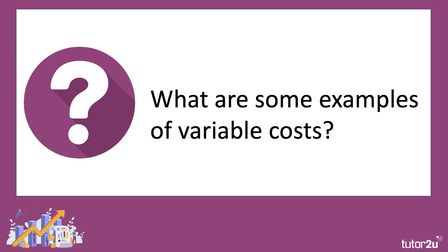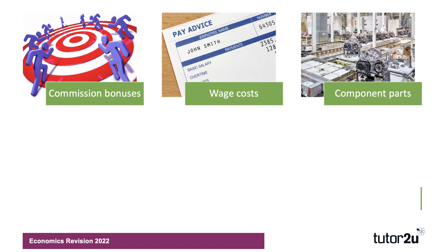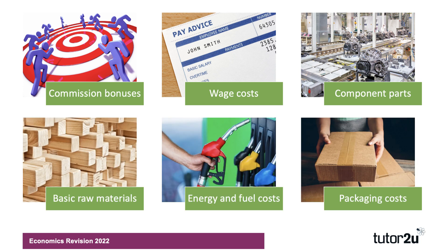So what are some good examples of variable cost? Things like commission bonuses — you pay people more when output rises, often used in advertising and sales. Some wage costs are variable costs; for example, the cost of employing part-time temporary staff is counted as a variable cost. Often those costs are seasonal — the retail sector might employ more people at Christmas or Easter, and tourism and leisure businesses might employ more people in the summer. Component parts are clearly a variable cost, since the more you produce, the greater the amount you need to buy. Basic raw materials — wood, steel, copper, and aluminium.